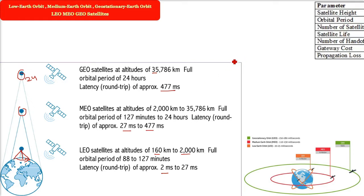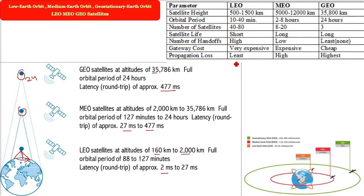So summarizing what we have discussed: satellite height — LEO is 500 to 1500 km, MEO is 5000 to 12,000 km, and GEO is 36,000 km. The orbital period — LEO is about 10 to 40 minutes, MEO is around 8 to 20 hours, and GEO is around 24 hours.